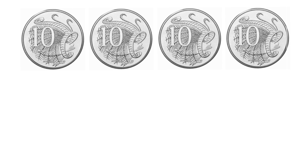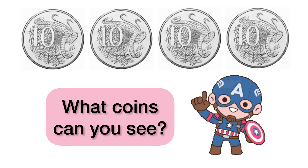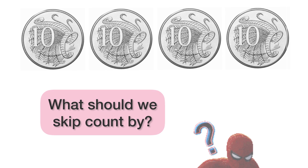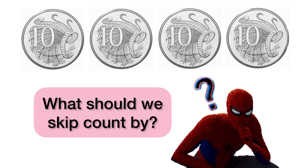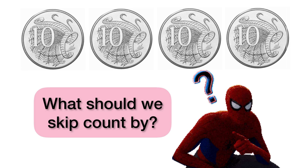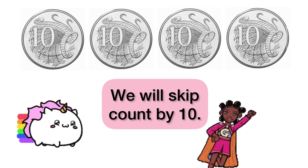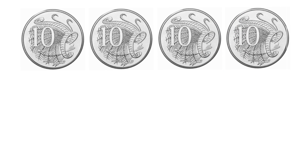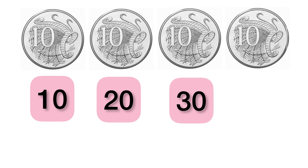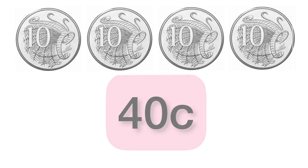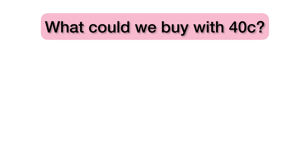Now let's add cents together. Can you see what coins we have? We have 10 cent coins. What do you think we should skip count by? That's right, we're going to skip count by 10 because we have 10 cent coins. 10, 20, 30, 40. So all together we have 40 cents. What could we buy with 40 cents?